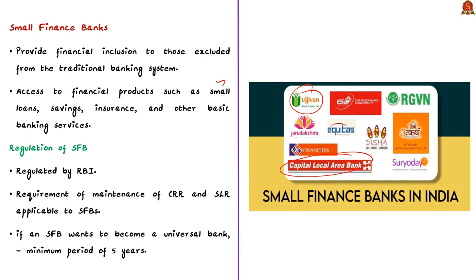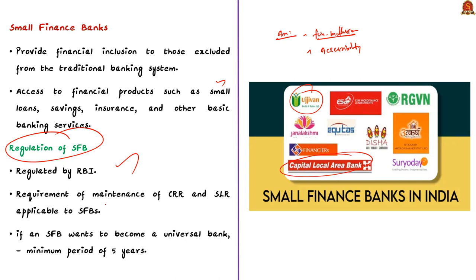Now let us see the aims of small finance banks. The objective is to provide financial inclusion to the segments which are often excluded from the traditional banking system, helping them access financial products like small loans, savings, insurance, etc. They are regulated by RBI, and all norms applicable to commercial banks, including the requirement of CRR and SLR maintenance, are generally applicable to small finance banks. According to RBI, if any small finance bank wants to become a universal bank, it has to complete a satisfactory track record of performance for a minimum period of 5 years.